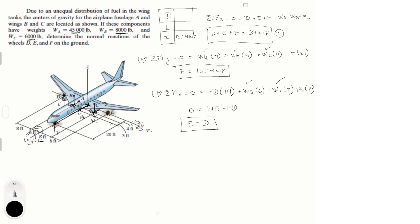So, if E is equal to D, we're going to plug this into equation 1. Remember, equation 1 is D plus E plus F is equal to 59. So, I'm going to plug in 13.74 which I found here. And I know that D and E are the same. So, I know that D plus E is equal to 45.26 but I know that D is equal to E. So, that means that 2D is equal to 2E and is equal to 45.26. So, I can solve for them and say that D is equal to E and is equal to 22.63 kip. And yep, final answer for D, final answer for E and final answer for F.